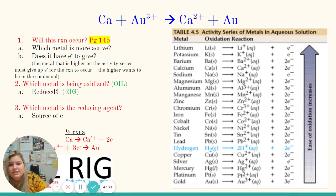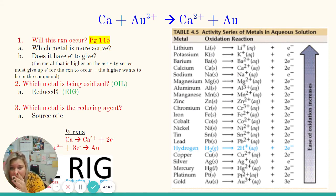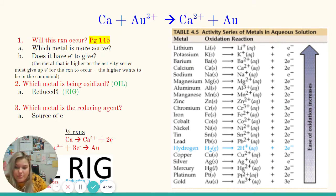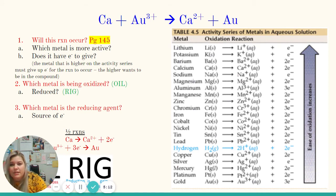When an element gives up electrons it's losing electrons, which means it becomes more positive. Comparing the reactant side to the product side: calcium starts at an oxidation state of zero and on the product side it lost electrons and went to +2. We call that oxidation. A helpful acronym is OIL — Oxidation Is Losing electrons. So calcium in this reaction is being oxidized; it loses electrons to become Ca²⁺.